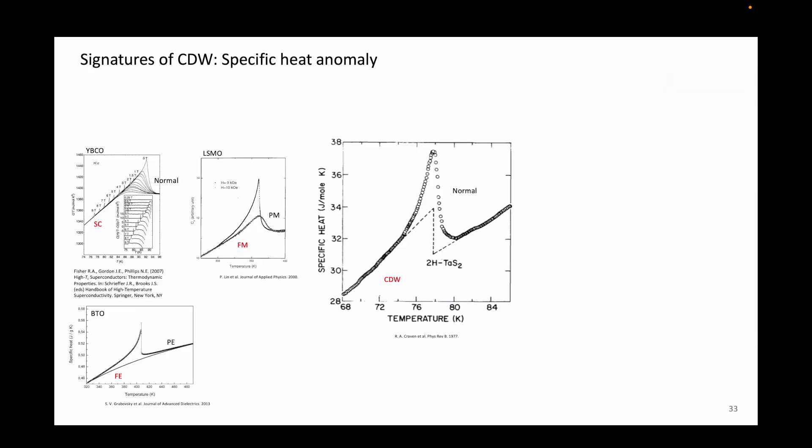Let's go over some of these in more detail. Charge density wave, like any other phase transitions, shows up as an anomaly in the specific heat. This is a consequence of the energy that need to be paid in order to order the system.